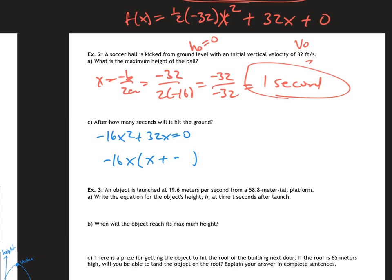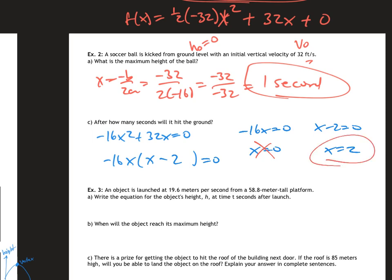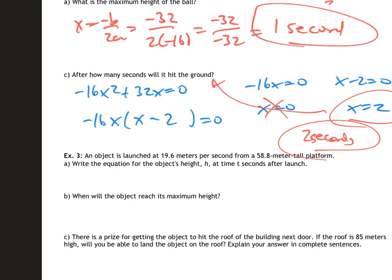Factoring out negative 16x leaves x and negative 2, so setting each factor equal to zero gives x equals 0 and x equals 2. x equals 0 is when the soccer ball leaves the ground after being kicked — that's the starting point. x equals 2 is when it falls back down and lands, so after two seconds the ball hits the ground. This makes sense: after one second it's at peak, after two seconds it hits the ground.